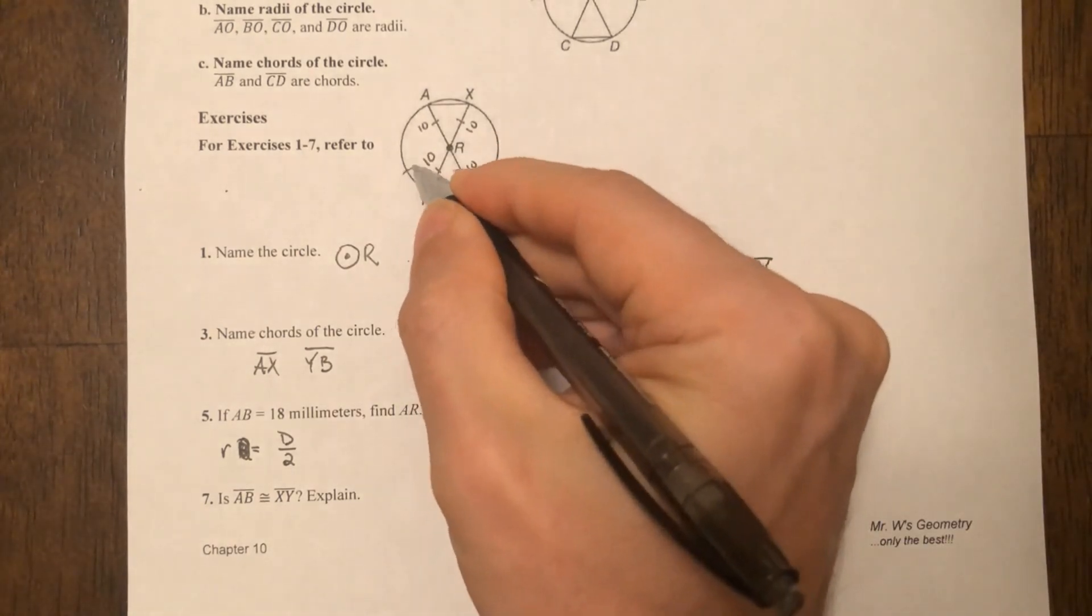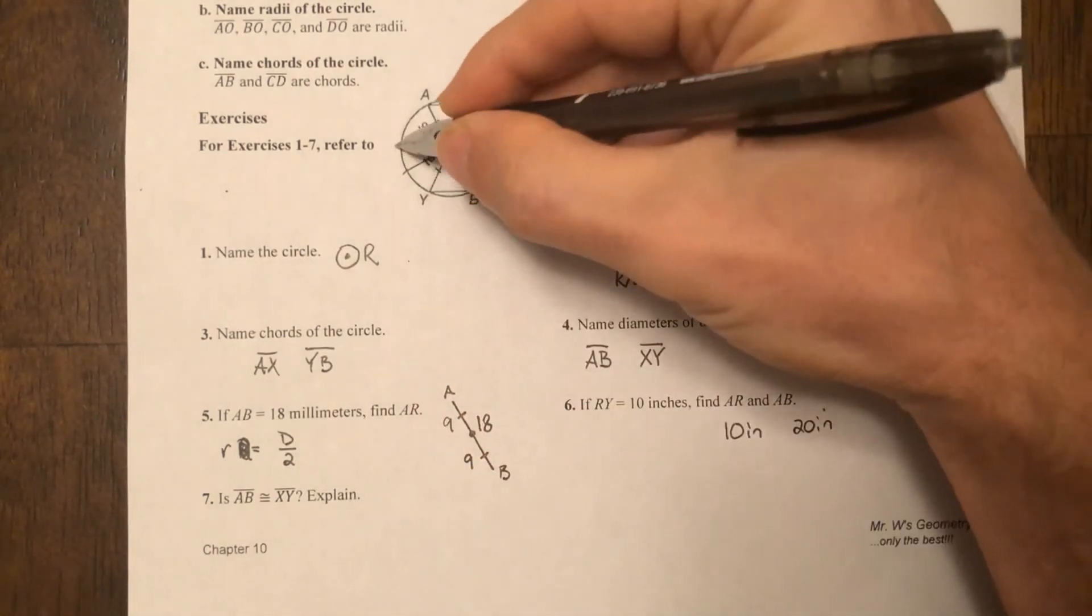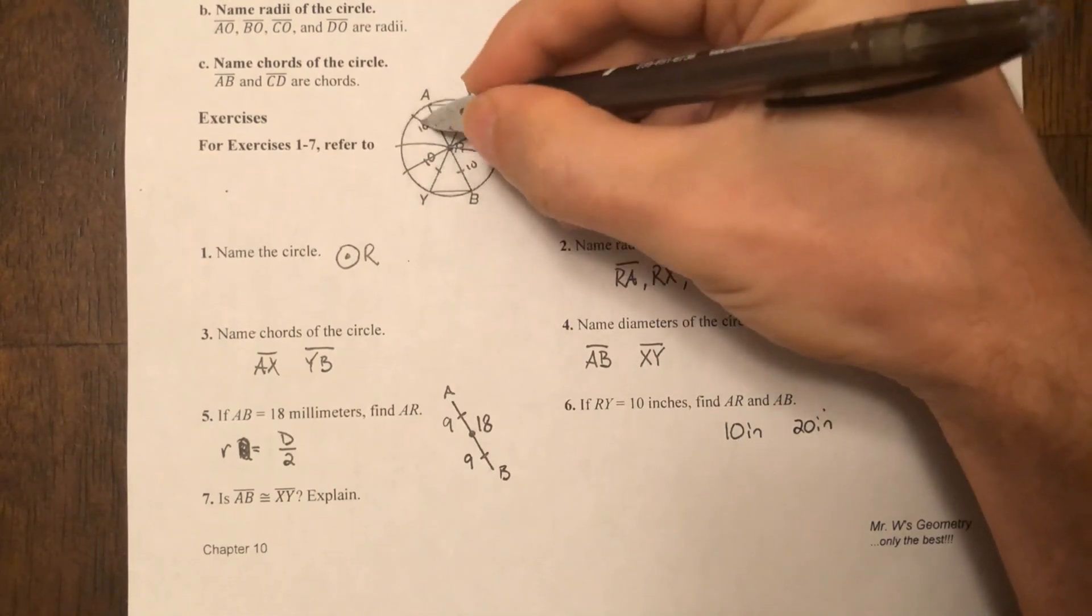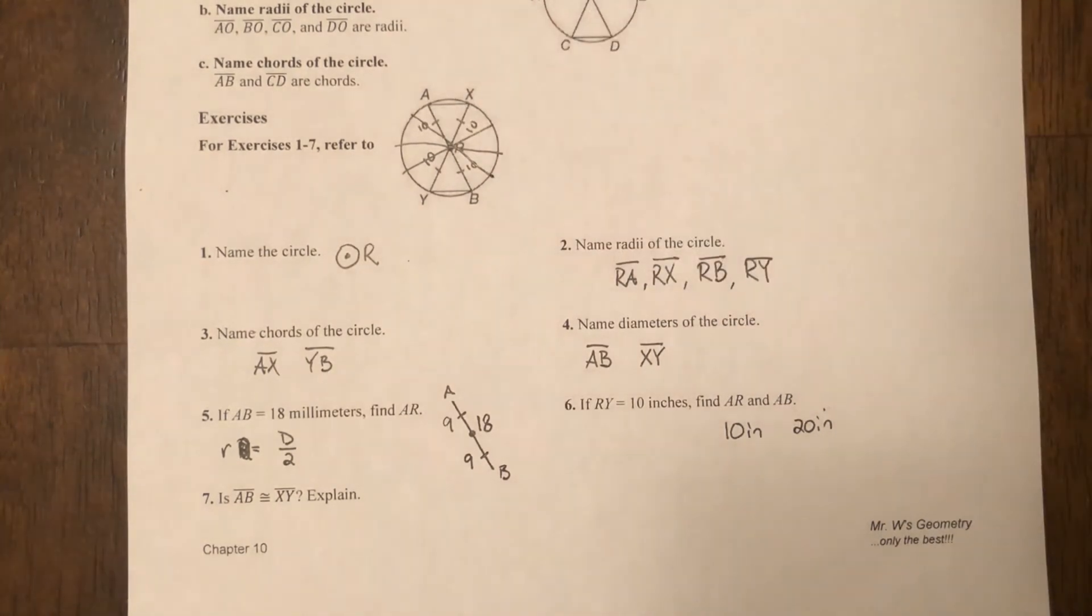It doesn't matter if I draw a diameter like this or across here or across here—probably help if my lines were straight. But all diameters in the same circle are going to be congruent. Likewise, all radii in the same circle are going to be congruent.